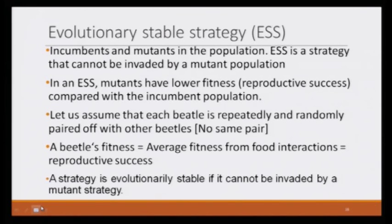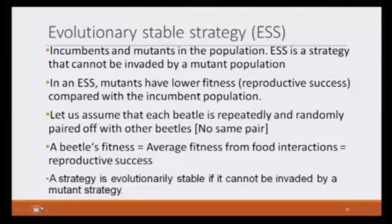Let us talk about evolutionary stable strategy in a little detail. We have two types: one is the incumbent type, which was present earlier, and now there is also a new mutant type in the population. ESS, or evolutionary stable strategy, is a strategy that cannot be invaded by a mutant population. If a particular characteristic is evolutionary stable, it means animals with that characteristic will have higher fitness compared to animals of the same kind with different characteristics.